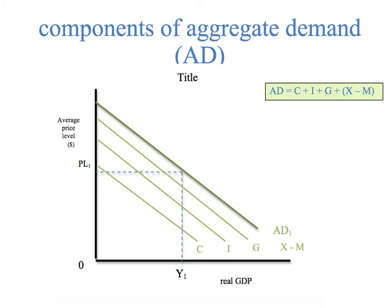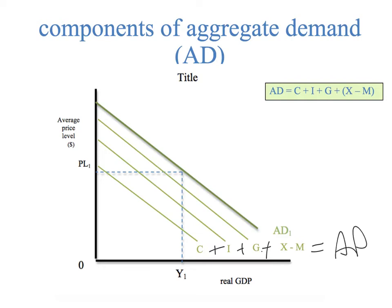Here's something useful to show students: AD equals C plus I plus G plus X minus M. In a way, the aggregate demand curve is a collection of expenditures. If you think of consumers spending this much, plus what investment is — what happens with firms and money borrowed by private individuals — plus government spending, plus the difference between exports and imports, you get a total aggregate demand line.